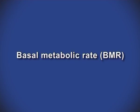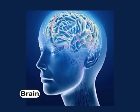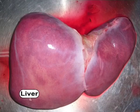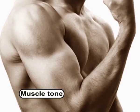Basal metabolic rate (BMR) is the amount of energy required to carry on the involuntary work of the body. It includes the functional activities of vital organs such as brain, heart, liver, kidney and lungs; secretory activities of the glands; peristaltic movements of the gastrointestinal tract; oxidation occurring in resting tissues; and maintenance of muscle tone and body temperature.